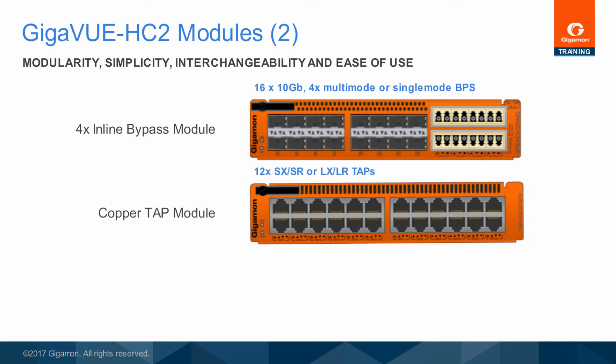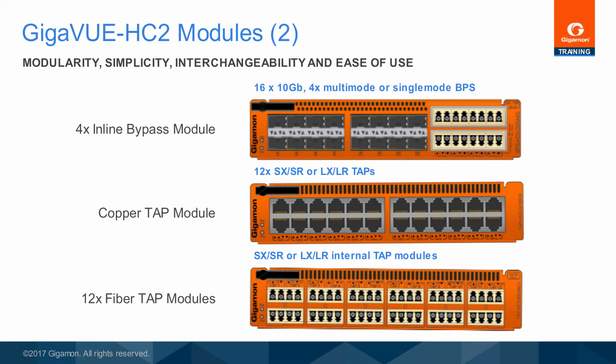A 1 gigabit internal copper tap module provides access to 12 monitored links through RJ45 Ethernet cables. The copper tap module also supports inline bypass functionality on a per-link basis so that you can configure 12 taps, 12 protected inline bypass links, or a combination of tap and inline bypass. Additional internal tap modules support both multimode and single-mode 10 gigabit links, allowing for access to traffic on up to 12 monitored links while simultaneously eliminating a lot of cable in the rack.